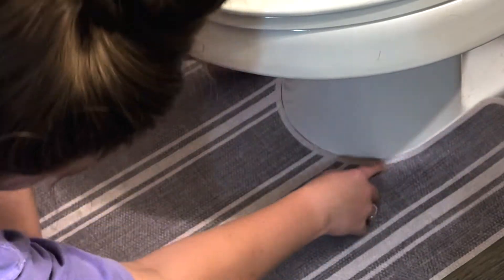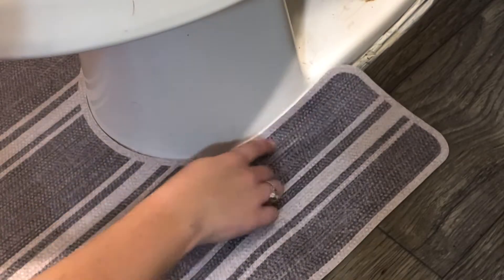First, line up your mat to see where it pulls up against the toilet. That is the part you will need to trim off.